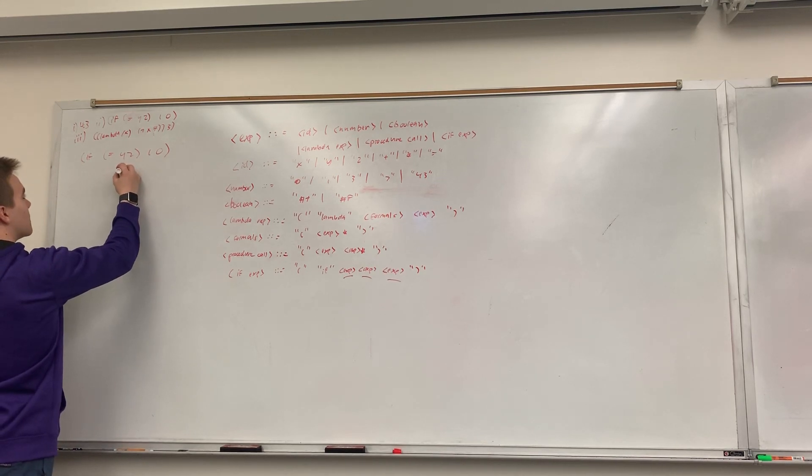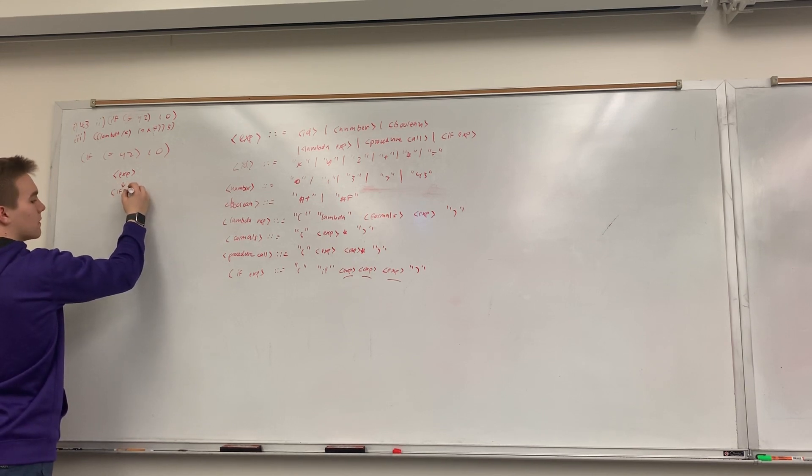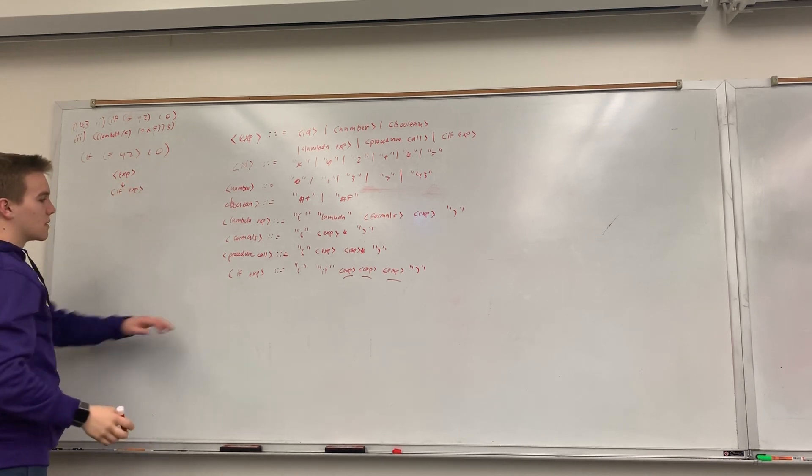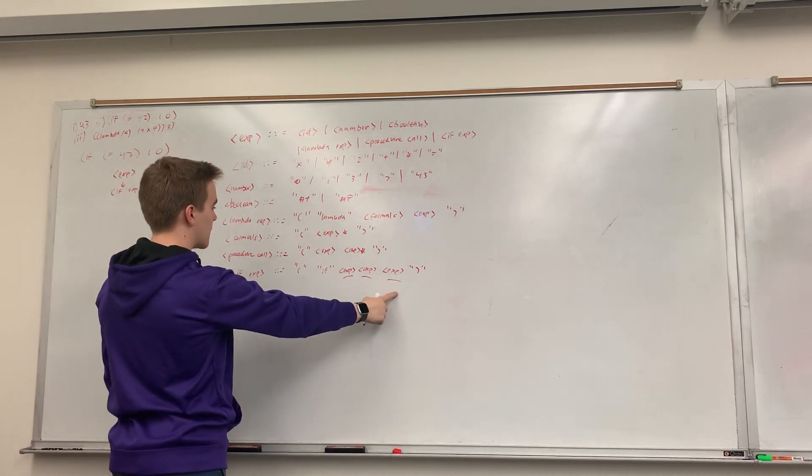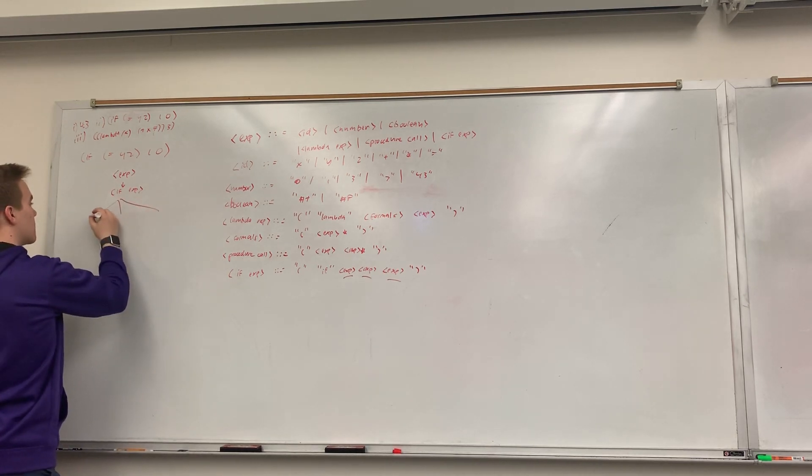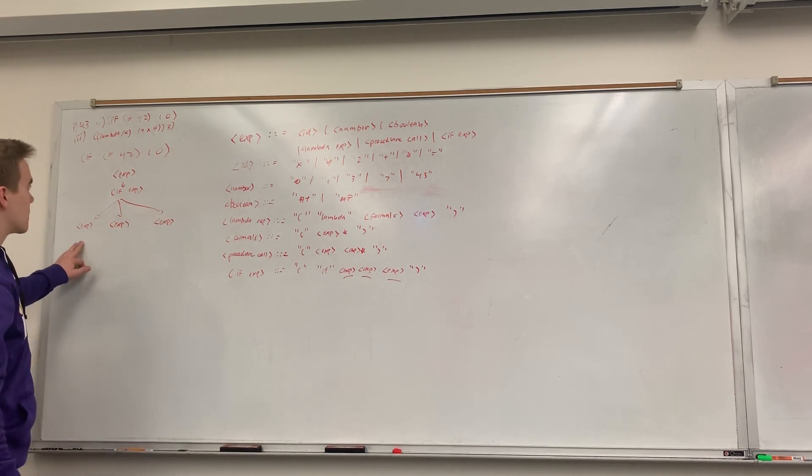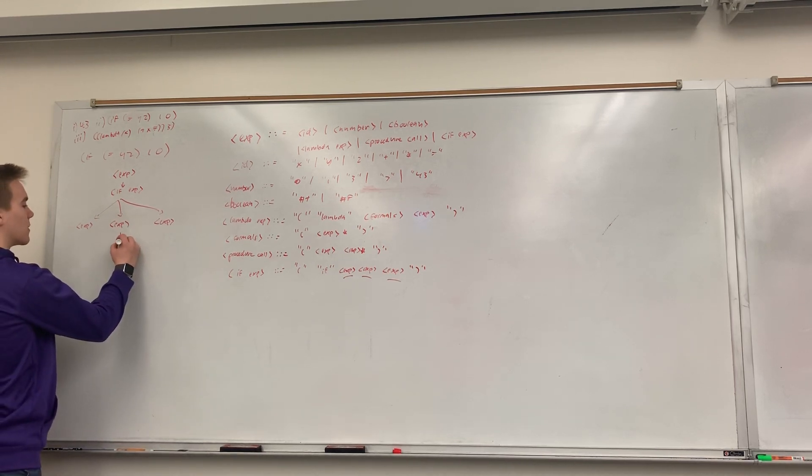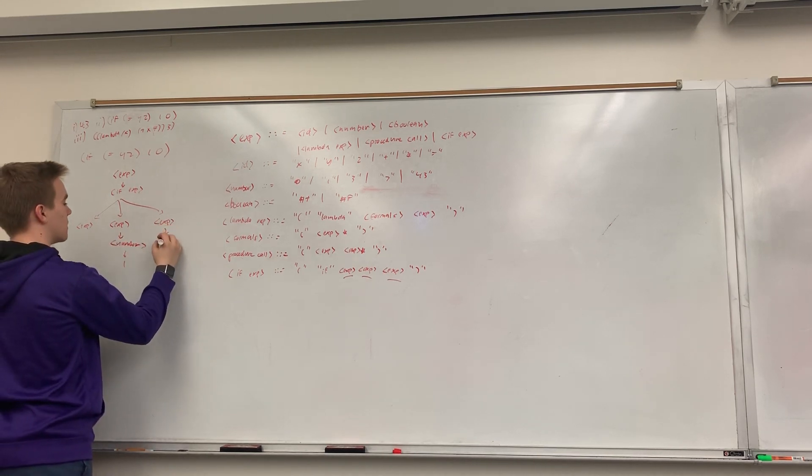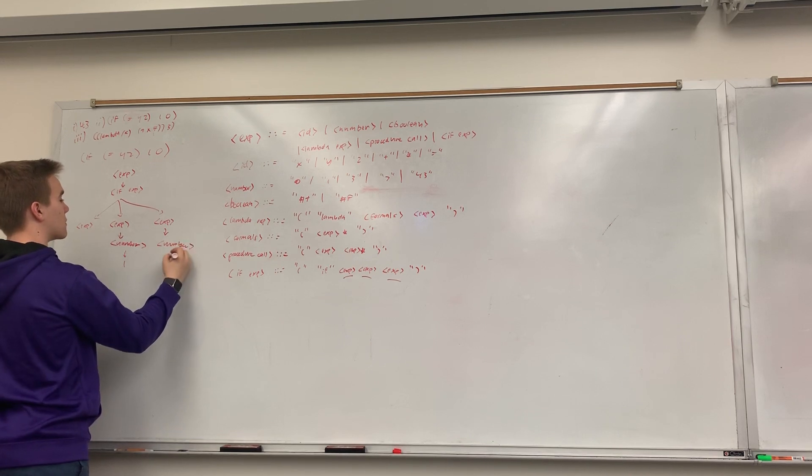So, I get this from expression. We're calling if expression, which goes to, and then this needs, this calls expression three more times, right? So, the first one of those, well, let's deal with these guys first. This expression will call number, which we'll call 1. This will also call number, which will go to 0.